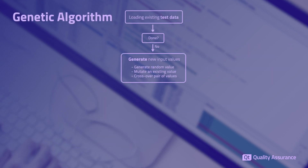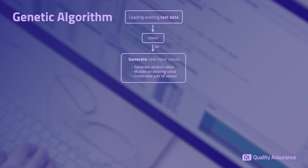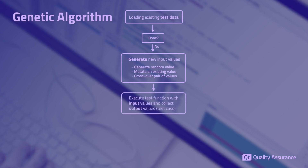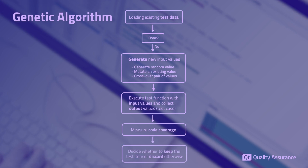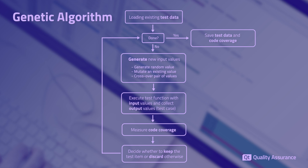At every iteration, Cocoa Test Engine generates random inputs using numerical distributions or regular expression patterns. It also performs crossover and mutation of previously discovered test data to generate new inputs. This set of new inputs are executed, their corresponding outputs are recorded, and the resulting code coverage is measured. The algorithm then decides whether to keep the new test item based on whether it covers new parts of the source code. By doing so repeatedly several thousand times a second, we can obtain new test data that can complement the work of a human tester.